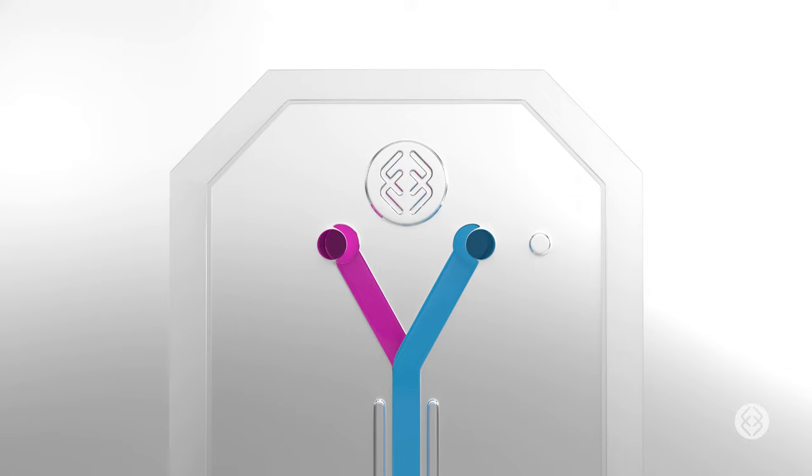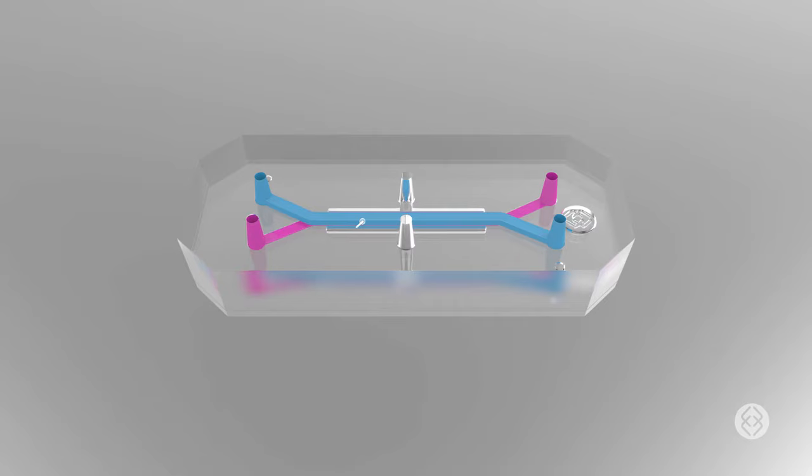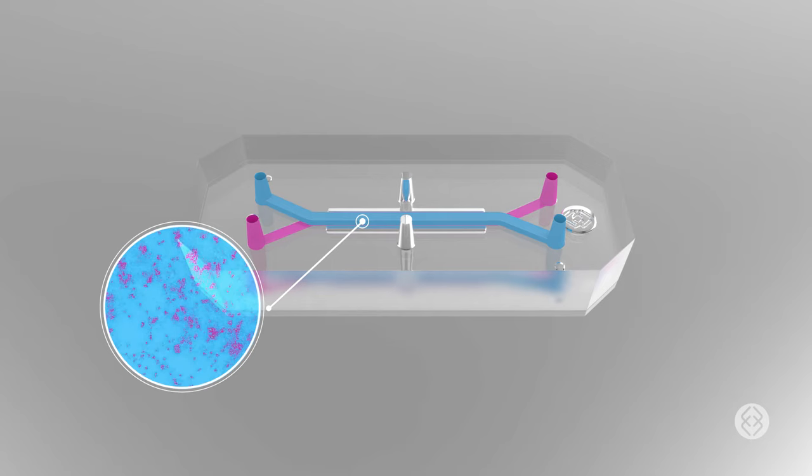The chip features two fluidic channels that form the necessary architecture for building tissue-to-tissue interfaces. It's made from a flexible polymer that's both stretchable and durable. Its transparency allows researchers to observe real-time cellular behavior inside the chip's fluidic channels.